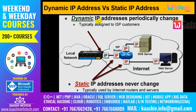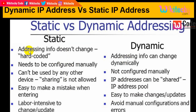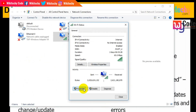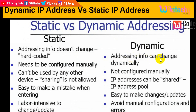A dynamic IP address will periodically change. It is typically assigned to ISP customers — the internet service provider dynamically allocates an IP address. Whereas a static IP address will not change; it will be forever. Here is the difference: for static IP, the addressing info does not change — it is hard-coded. For dynamic IP, the addressing info can change dynamically and needs to be configured manually.